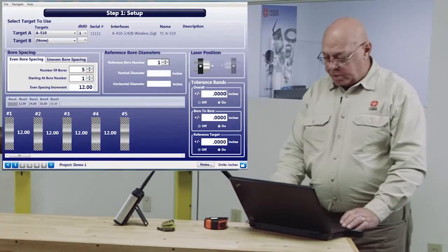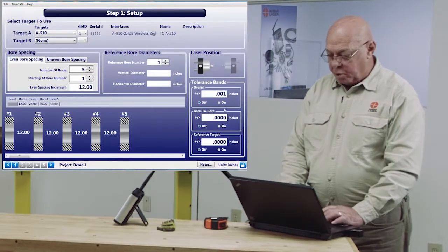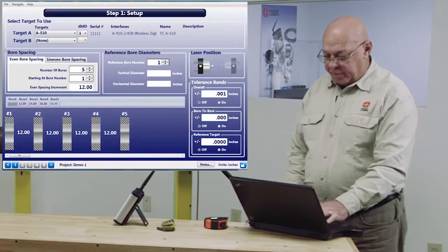My overall tolerance I'm going to set to 1,000, and bore to bore—in other words, from position to position—I want 5 tenths.